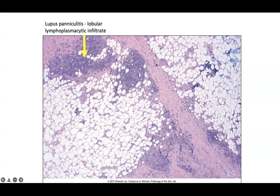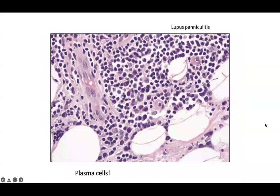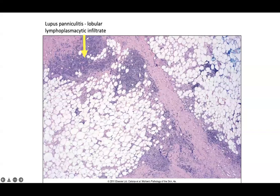On higher power, in between individual adipocytes, you notice lots of plasma cells as well as histiocytes. If you see lots of plasma cells within the infiltrate, consider lupus paniculitis, but you'll want to correlate with the clinical picture as well as low-power lymphoid aggregates within a lobular pattern.